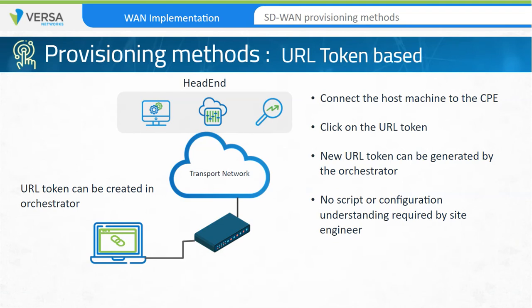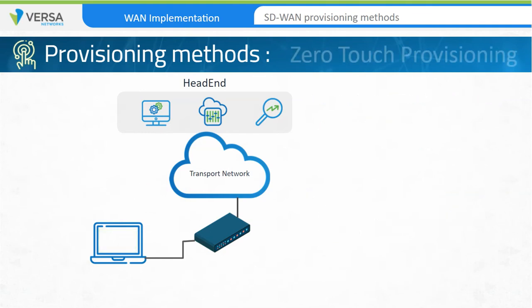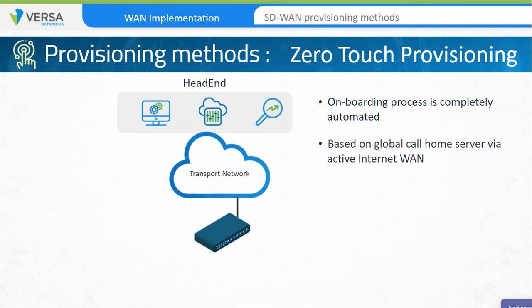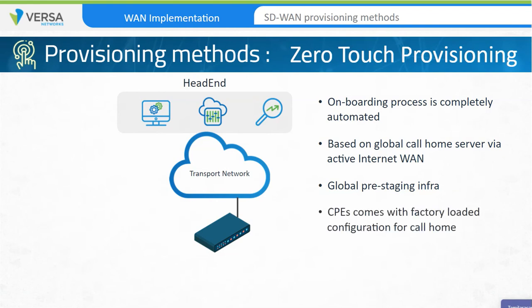This can be combined with two-factor authentication for additional integrity checks. The third approach towards simplifying device onboarding and implementation is zero-touch provisioning. With zero-touch provisioning, or ZTP, there's no need for an engineer at the customer site at all. The device onboarding process is completely automated with no human intervention. The customer edge device requires a WAN connection, and the bootstrapping will happen automatically. This approach requires a pre-staging infrastructure, and the device will have a pre-loaded factory configuration that will help in the zero-touch deployment. This can be bundled with two-factor authentication for additional integrity checks.